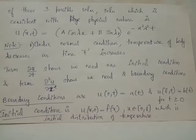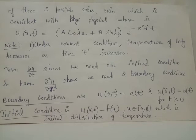Looking at the one-dimensional heat equation, we have ∂u/∂t = α²·(∂²u/∂x²). The term ∂u/∂t shows that we require one initial condition, and the term ∂²u/∂x² shows that we require two boundary conditions for solving problems.